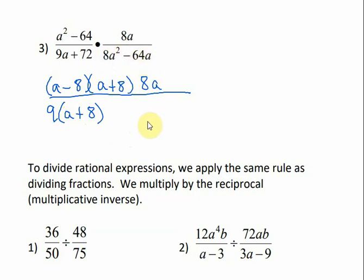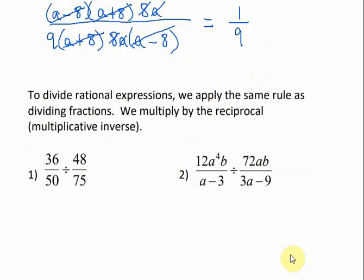And then in this, this is not a difference of perfect squares because we have an a here. That's not a perfect square. So we can factor out a greatest common factor of 8a. And that would leave me with a minus 8. So let's see what would cancel out. 8, 8, a, a, a plus 8, a plus 8, a minus 8, a minus 8. So what is my answer? If you said 9, you've got to watch that. Where is the 9? The 9 is in the denominator, so my answer would be 1 over 9.